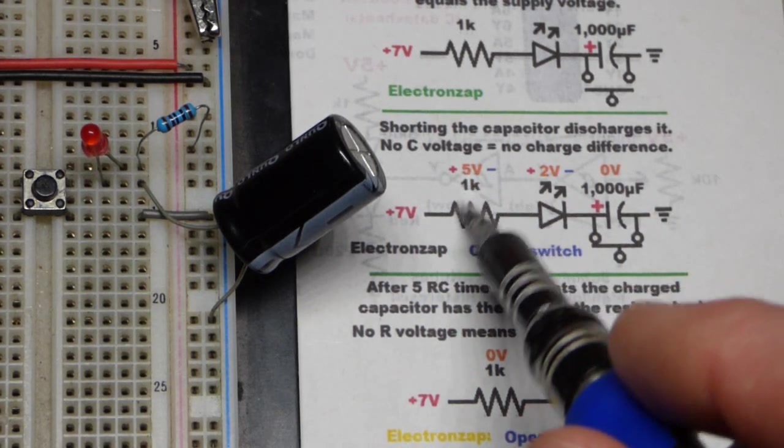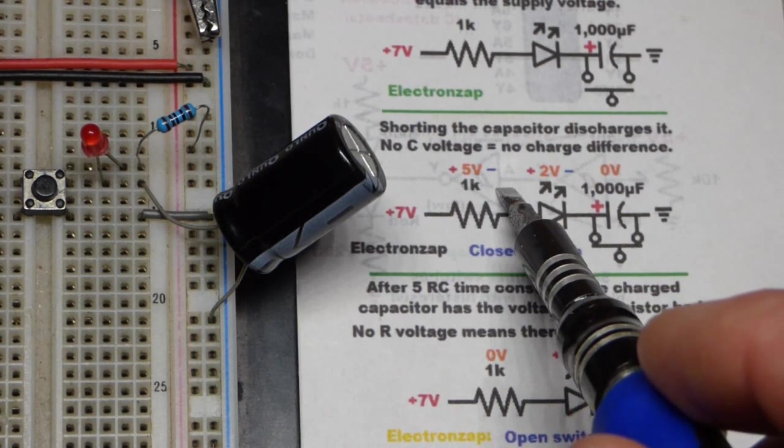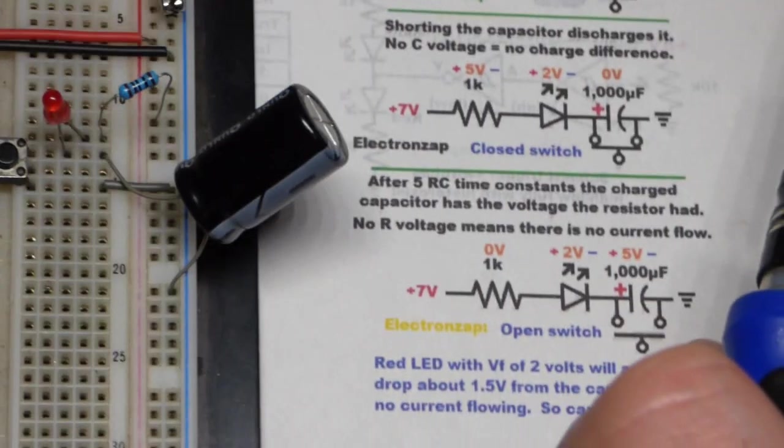And therefore the resistor, 1000 ohm resistor, is going to have about 5 volts across it. And as long as you hold the switch, that will remain true right there.